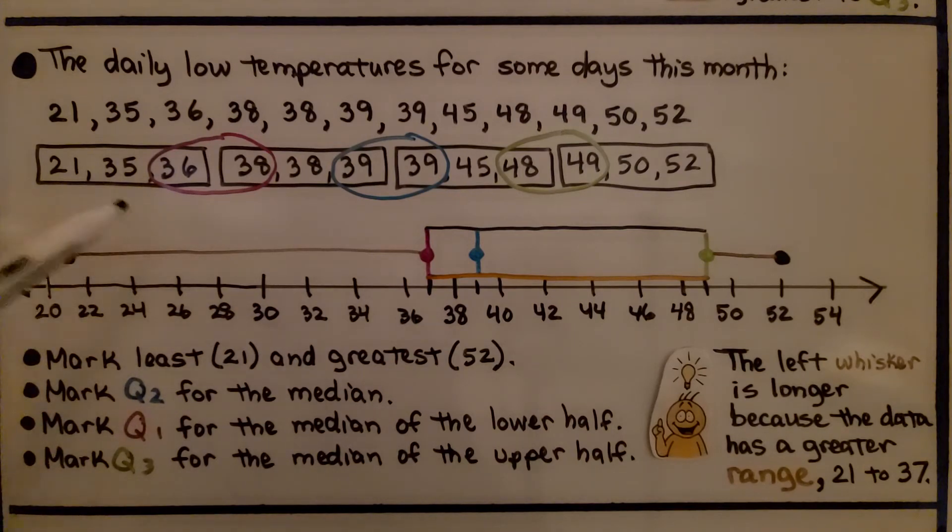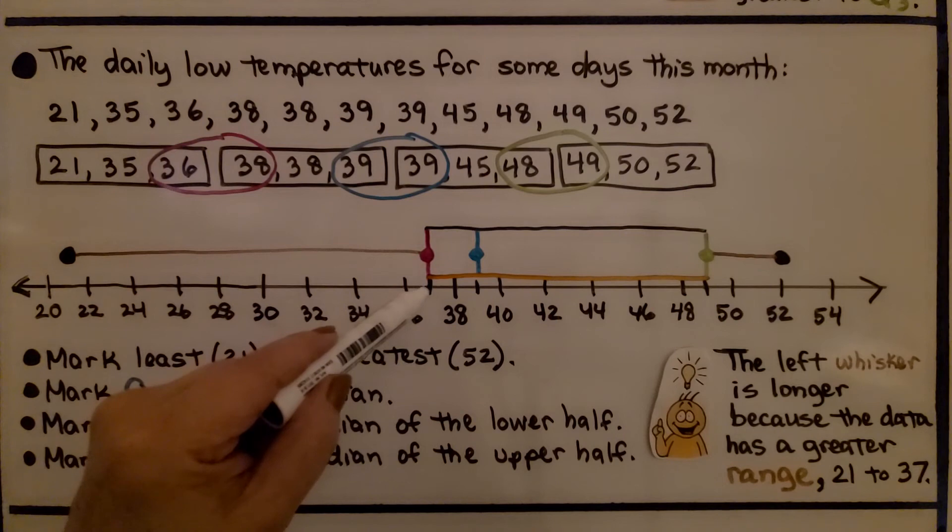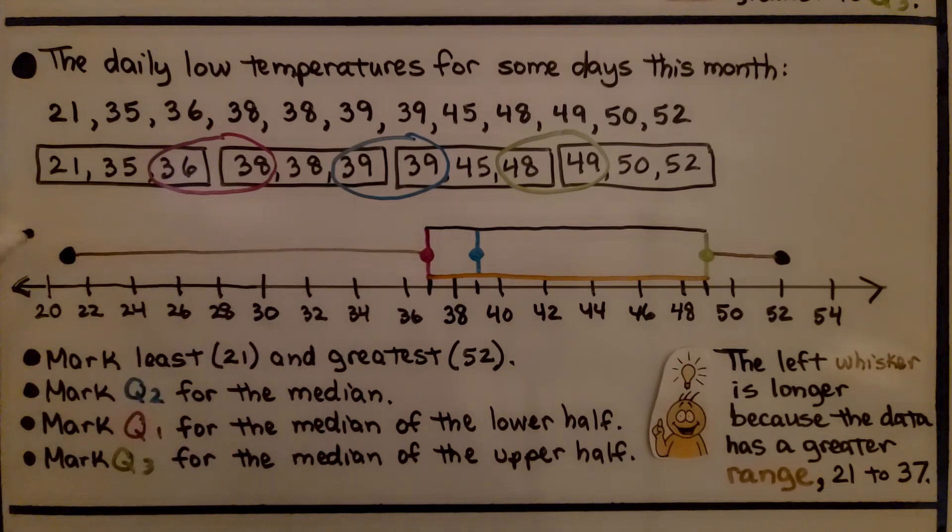And look at how long that left whisker is. The left whisker is longer because the data has a greater range. It has to go from 21 to 37. So that's why this whisker is much longer.